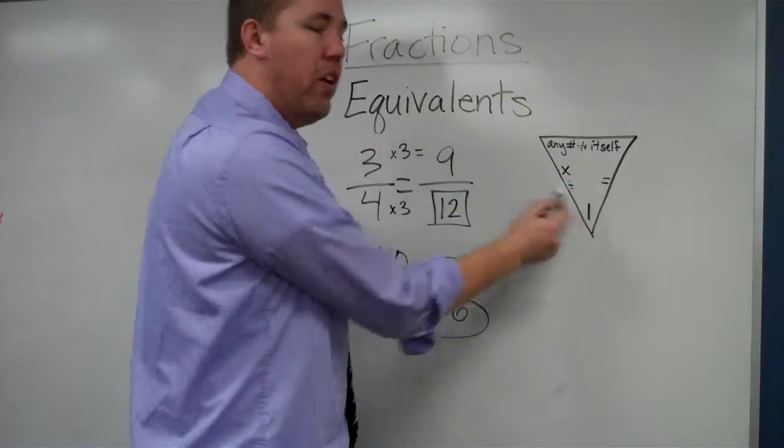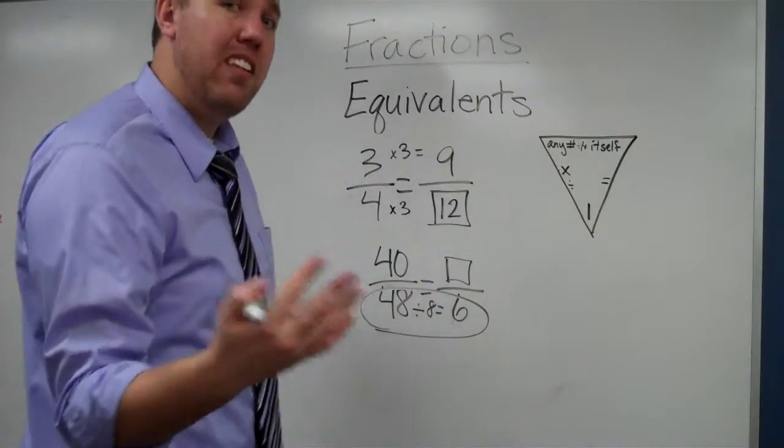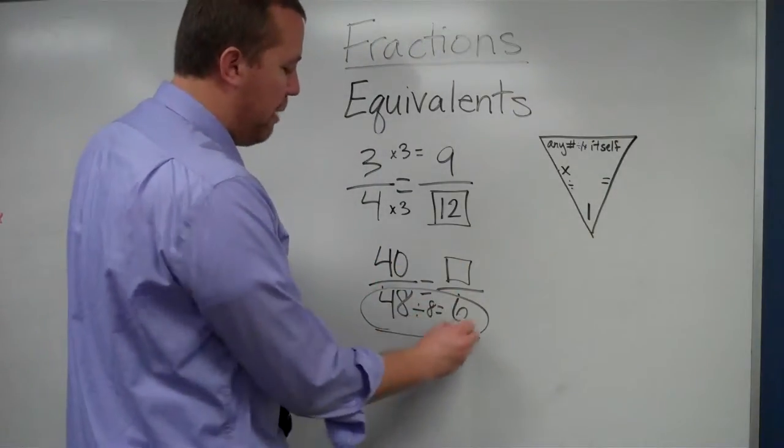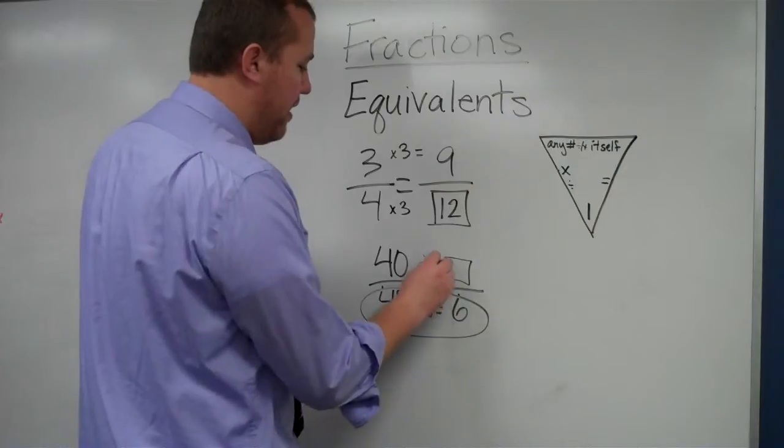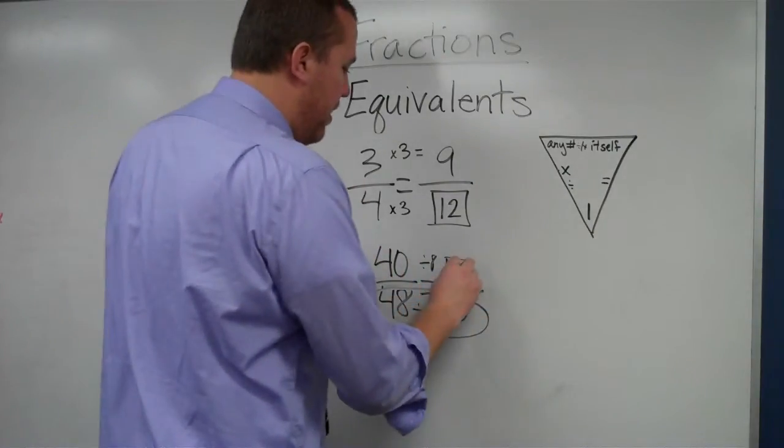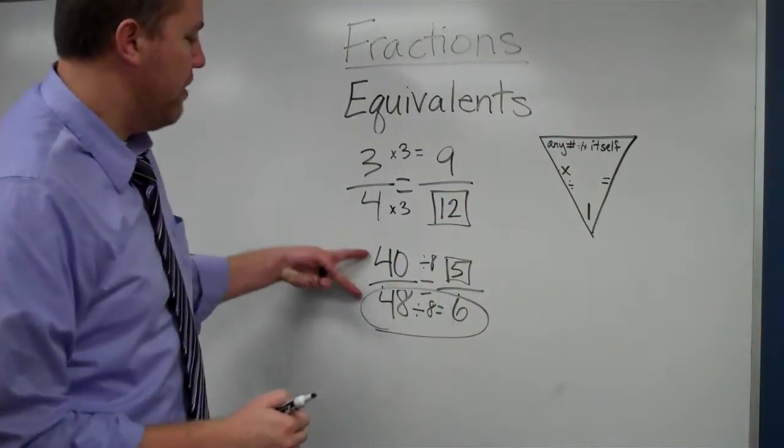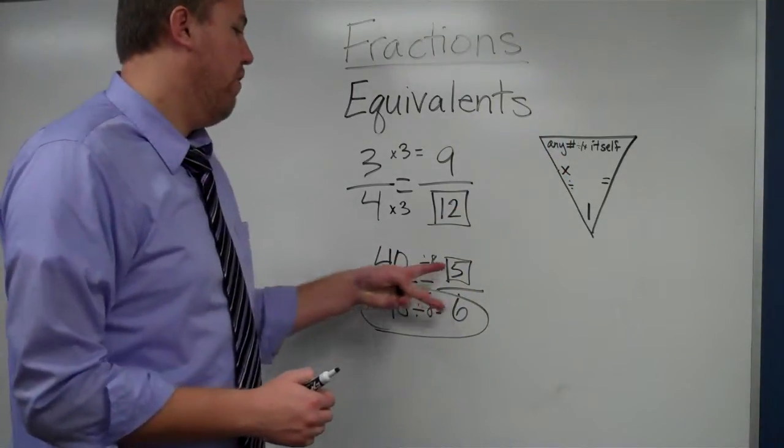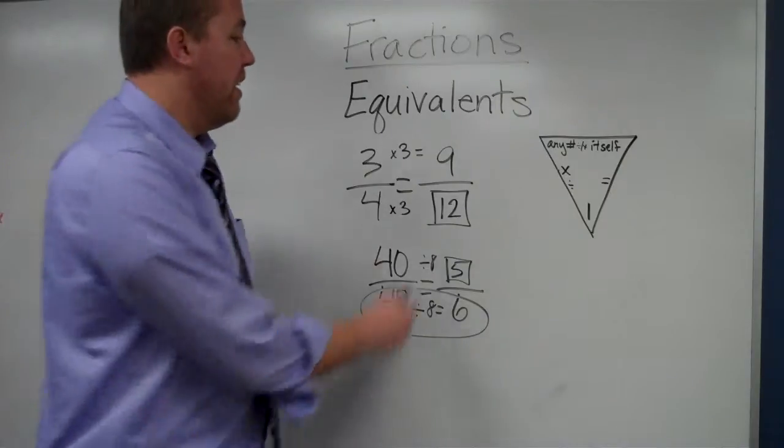Now, any number divided by one whole remains itself, remains an equivalent. So if I divide the bottom by 8, I've got to divide the top by the exact same thing. I do 40 divided by 8 equals 5. That way, we see that 40 48ths equals 5 sixths.